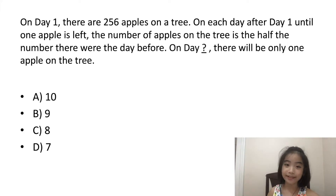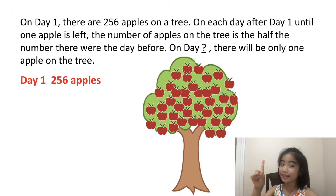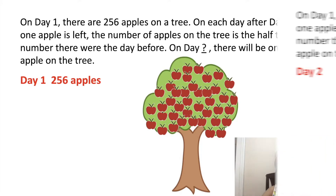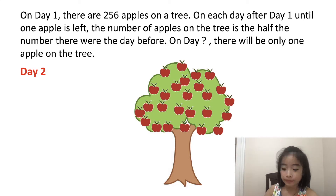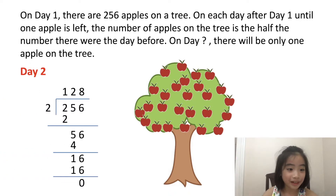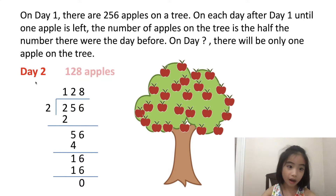So now let's figure this out together. We know that on day one there are 256 apples. On day two, the number of apples is half the number of apples on day one. So half of 256 is 128. So on day two, there are 128 apples.